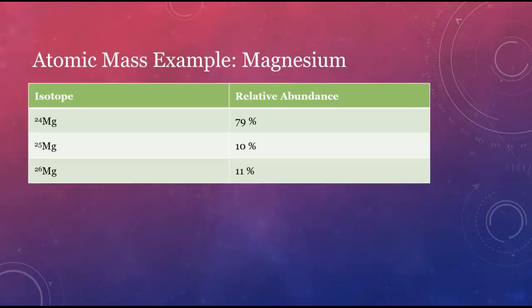Magnesium-24 is the most common isotope with a relative abundance of 79%. If you were to collect 100 magnesium atoms, regardless of where you got them, you'd probably find about 79 magnesium-24 atoms. Magnesium-25 is present in bulk magnesium samples at a rate of about 10%, and the remaining 11% of magnesium atoms are magnesium-26.